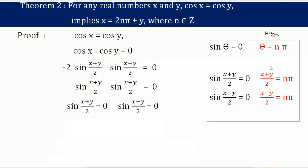So now θ converts: (x+y)/2 equals nπ for the first case, and (x−y)/2 equals nπ for the second case. For sin((x+y)/2) we write the first relation, and for sin((x−y)/2) we write the second relation.